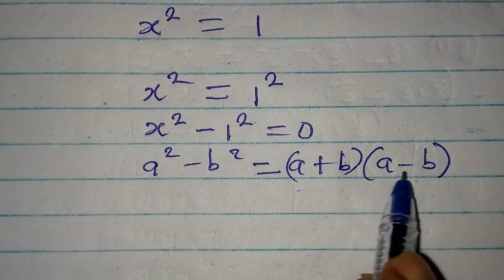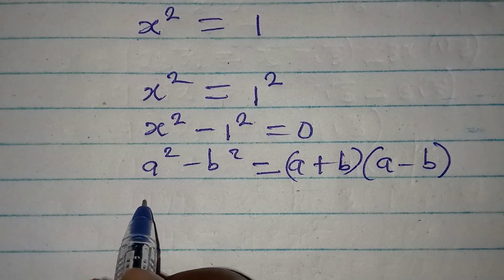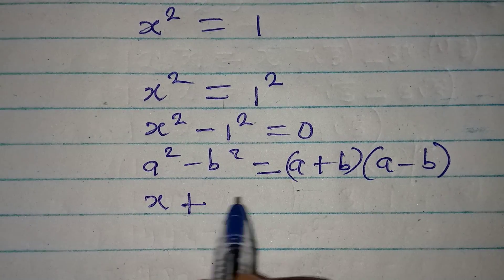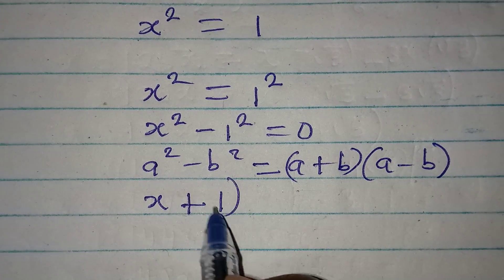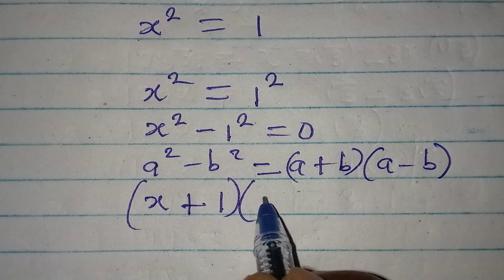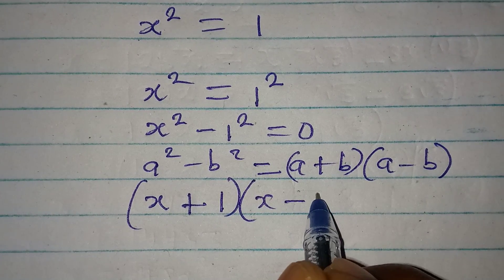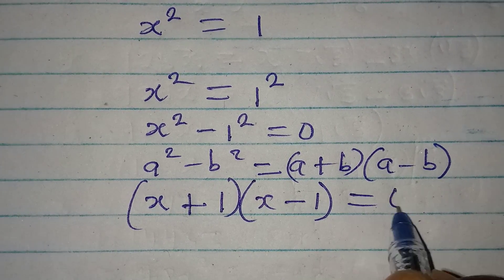Because we are having difference of two squares here we apply this. Our a is x, we have x plus our b is 1, we have 1. Then in the second bracket we have x minus 1, and this will be equal to 0.